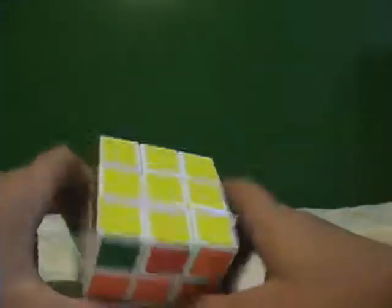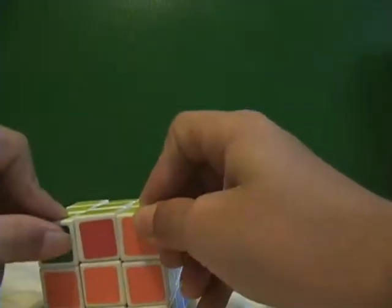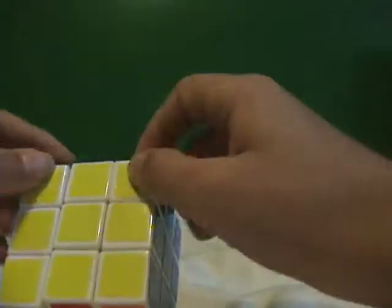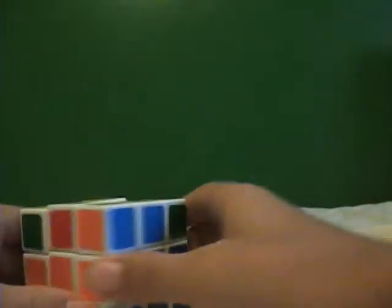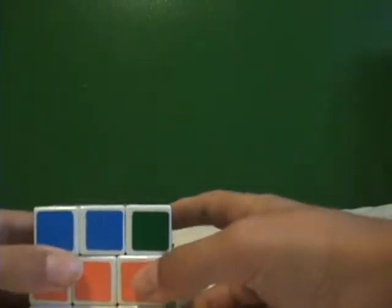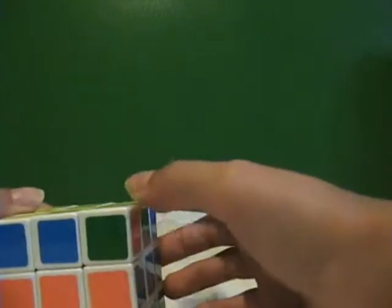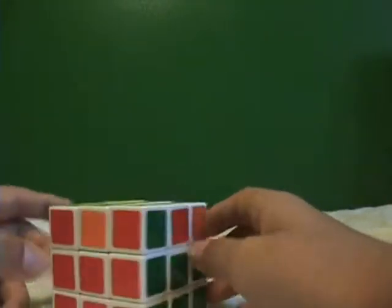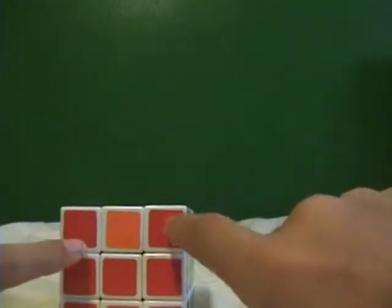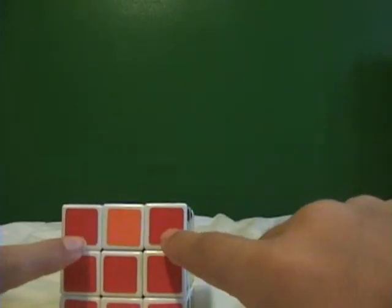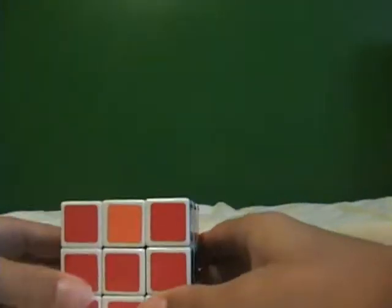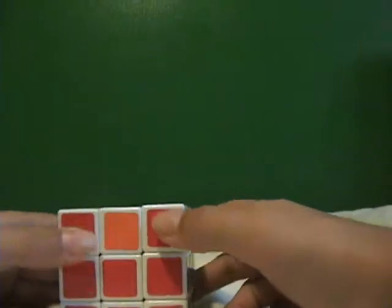Okay, in this step your goal is to put all the corners in the correct spot. Then you look around this layer and look for two corners that are in the right spot. If I look around, I see these two are in the right spot.